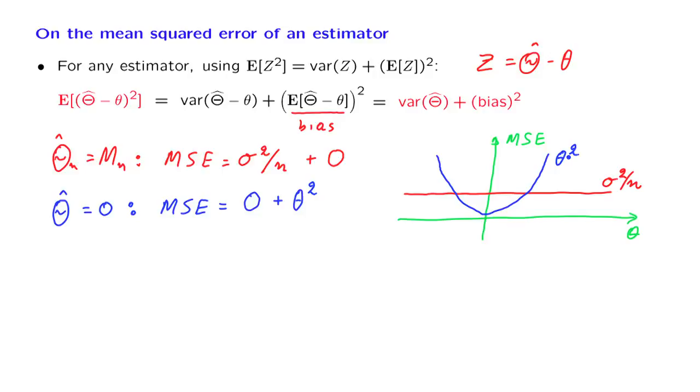At this point, there is no way to say that one is better than the other. For some theta, the sample mean has a smaller mean squared error. But for other theta, the 0 estimator has a smaller mean squared error. But we do not know where the true value of theta is. It could be anything. So we cannot say that one is better than the other.